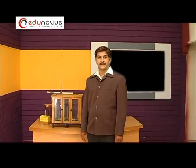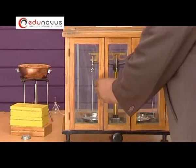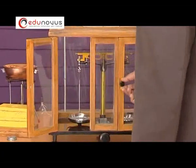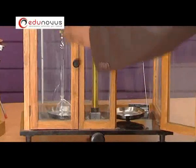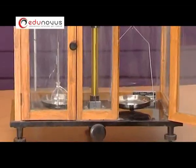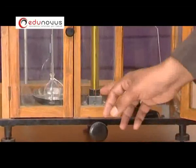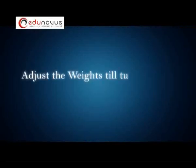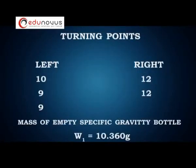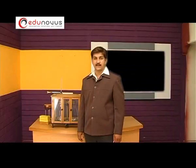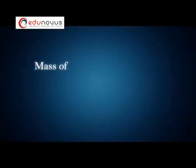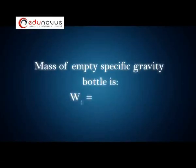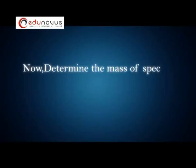Now, we are going to place the empty specific gravity bottle in the left pan. Consider some weights in the right pan until the pointer oscillates symmetrically. The mass of the empty specific gravity bottle is then determined using this physical balance.